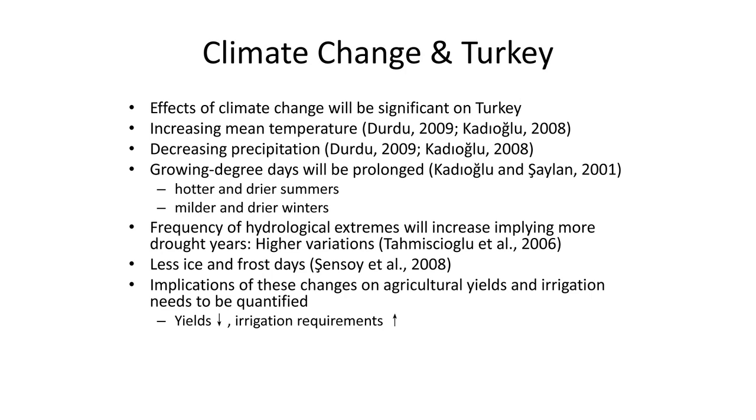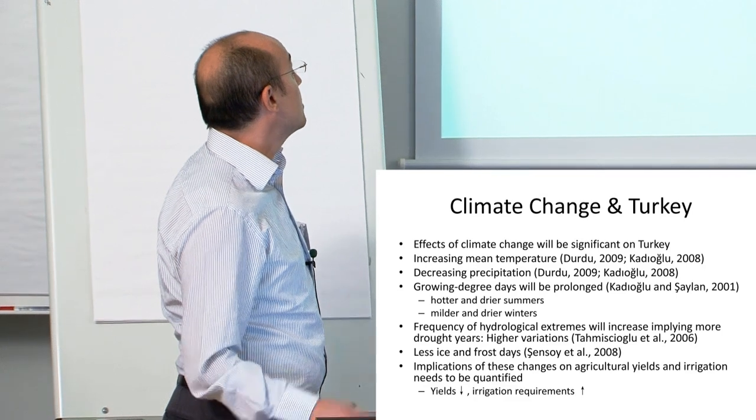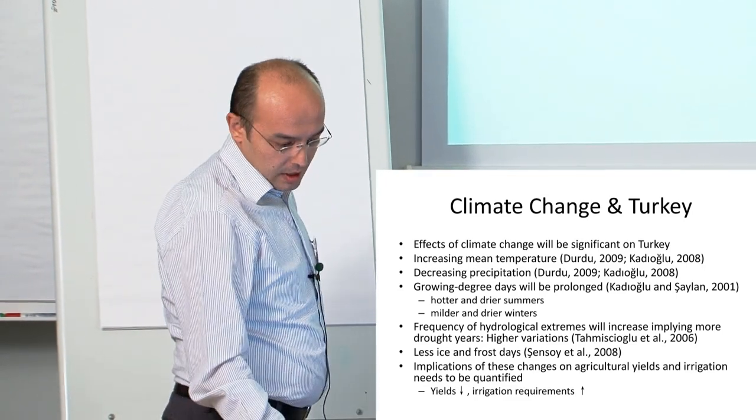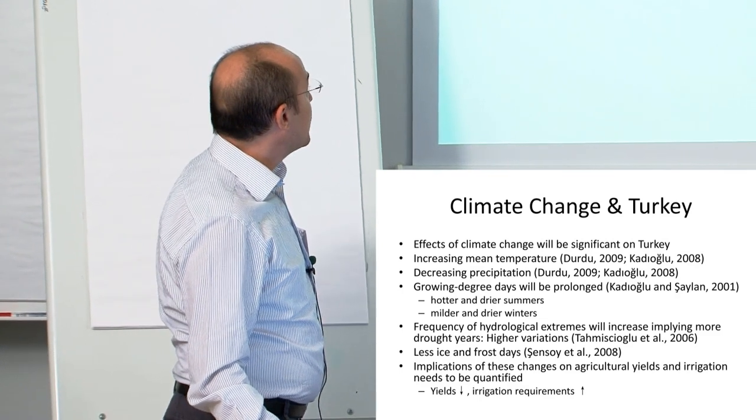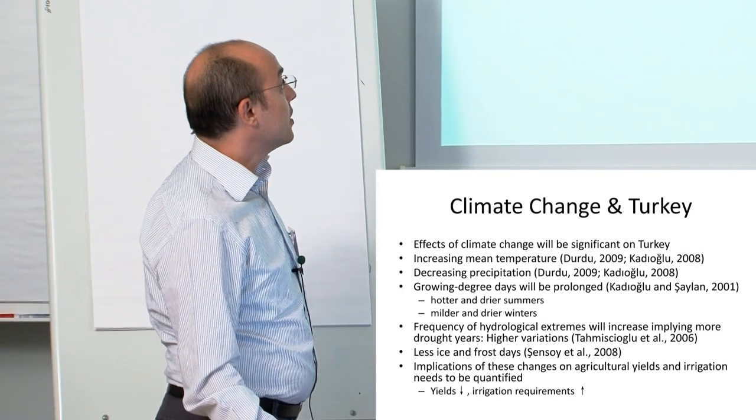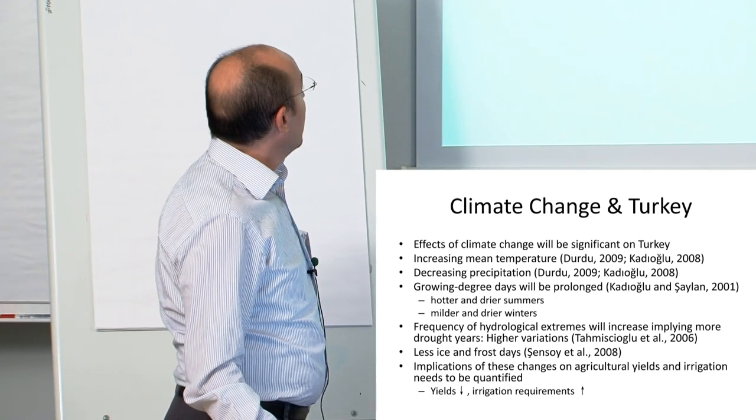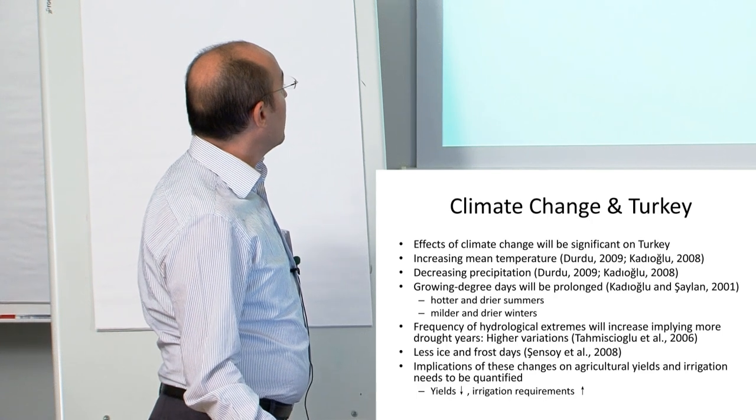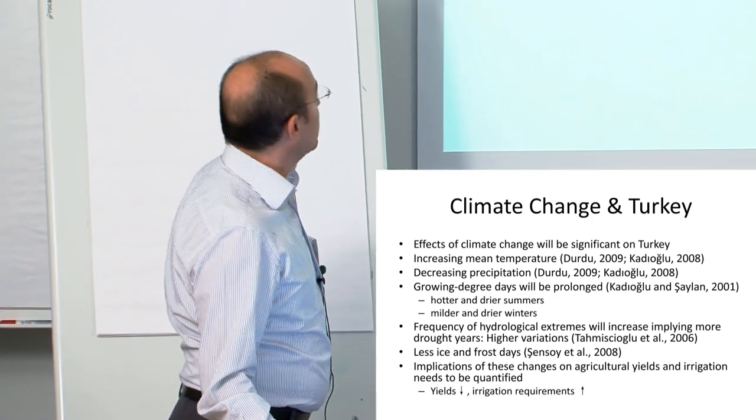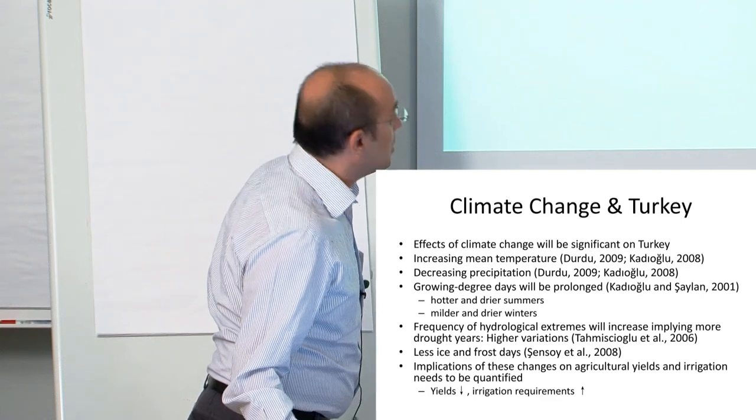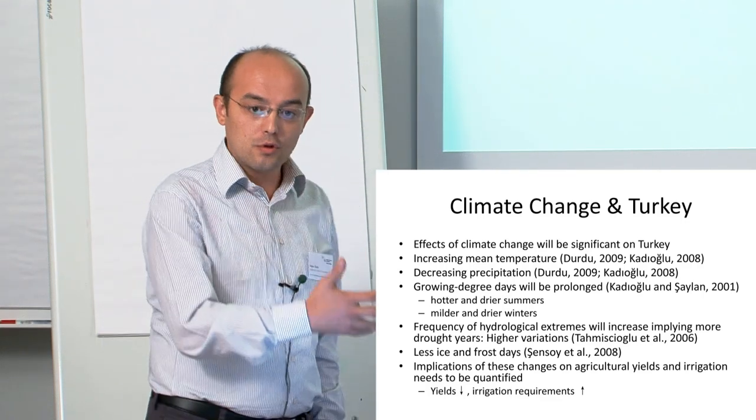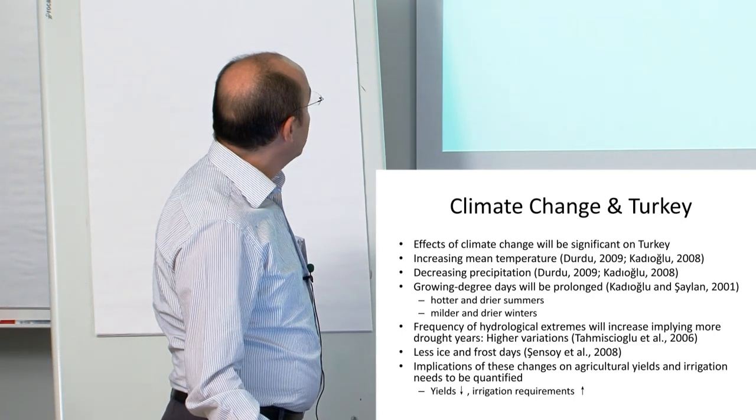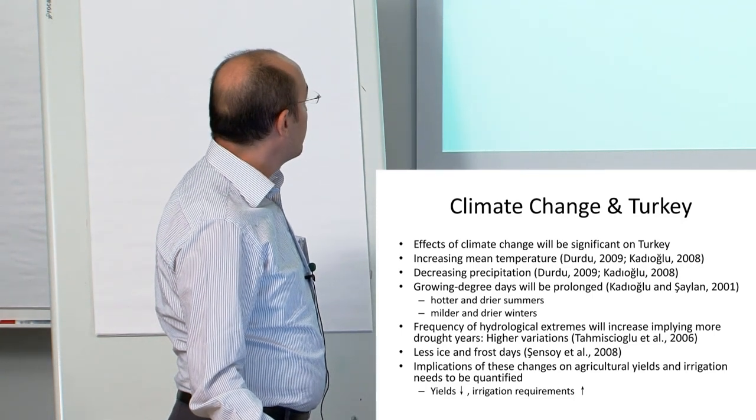In the literature, mean temperature will increase for Turkey. We expect precipitation to decrease and growing degree days to be prolonged. We will have hotter and drier summers, milder and drier winters. The frequency of hydrological extremes, droughts and floods, will increase, and there will be less snow and frost days.